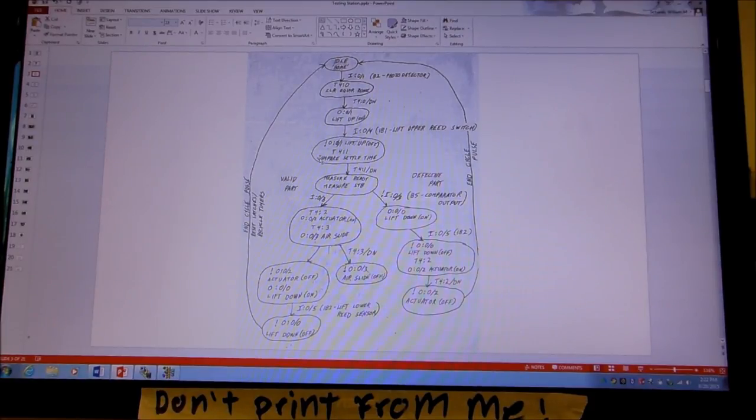Now we make the measurement. Well, we first have a time delay to settle out for the measurement, and then when we do that, we measure it. And for a valid part, we do the actuator immediately and the air slide. And then when the actuator is off, we send the lift down.